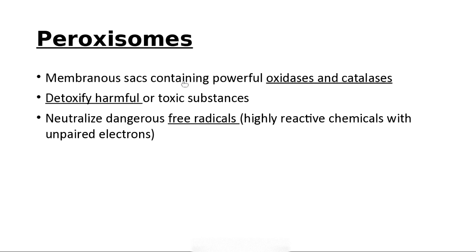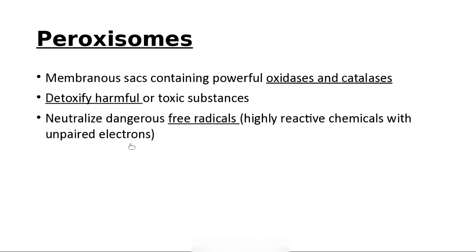Peroxisomes are membranous sacs that have oxidases and catalases, and they detoxify harmful substances such as hydrogen peroxide, which is very toxic to cells, is formed in cells, and must be broken down. When you pour hydrogen peroxide on a wound and it bubbles, what you're seeing is oxygen bubbles. It probably kills germs but is not good for tissue — never pour it in a deep wound, because it will cause a lot more damage than it will help. Peroxisomes also get rid of free radicals, which are chemicals that temporarily have unpaired electrons.